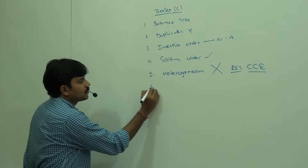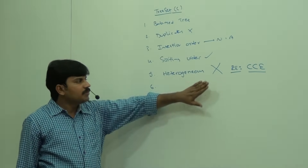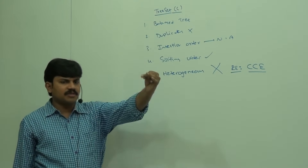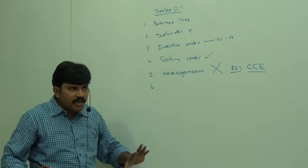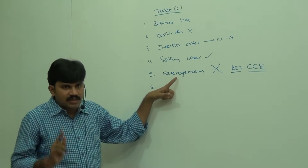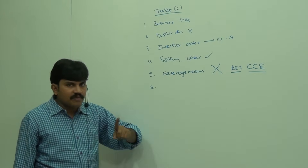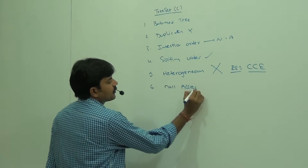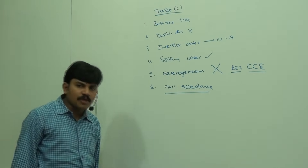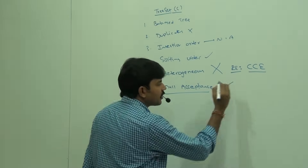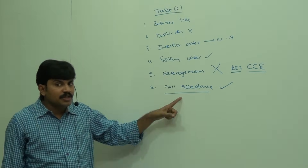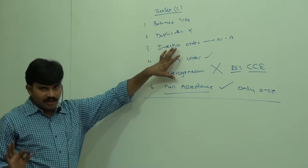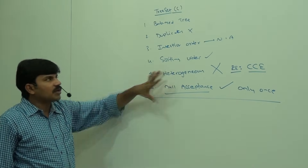So we will get ClassCastException. Up to this we covered several classes: ArrayList, LinkedList, Vector, Stack, HashSet, LinkedHashSet — nowhere is this type of restriction. Only in TreeSet and TreeMap are heterogeneous objects not allowed. For null acceptance, null is allowed, but only once.